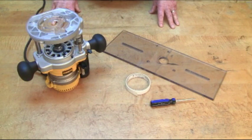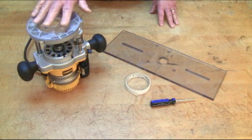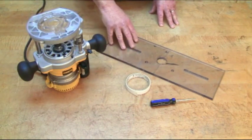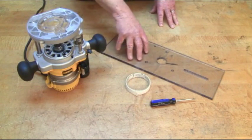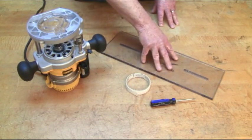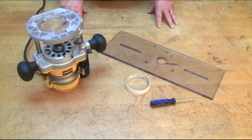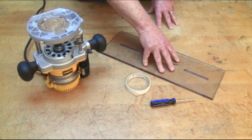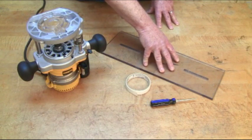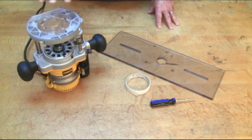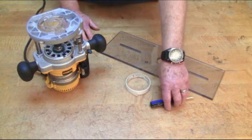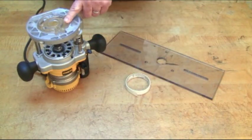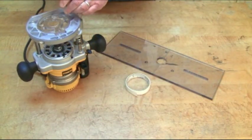The first thing that needs to be done is to mount your router to your base. The base comes without it being drilled because there's so many different types of routers on the market. We've set it up so that you can drill your own holes to fit your specific router. So the first thing that you need to do is to take your router and remove the base plate.